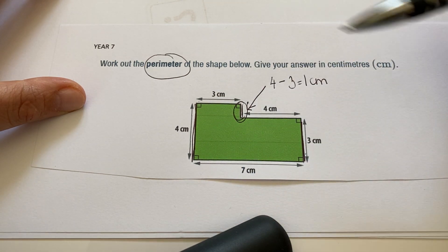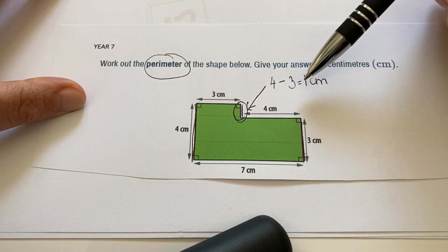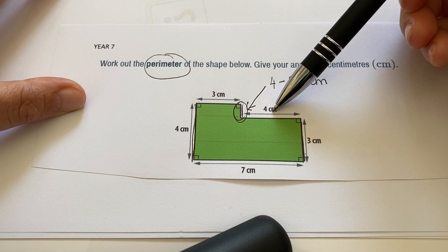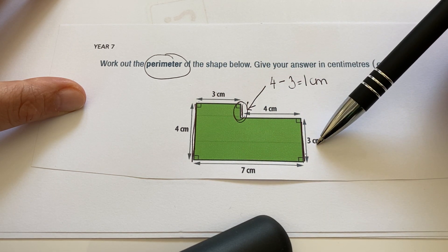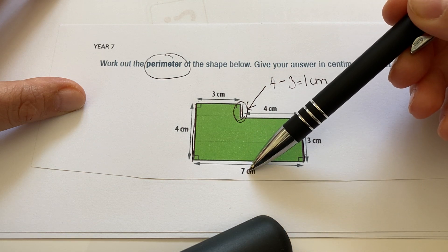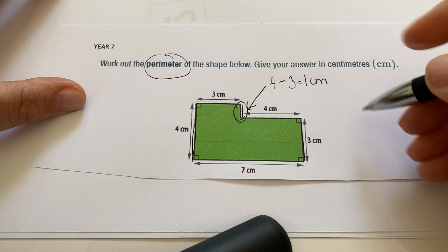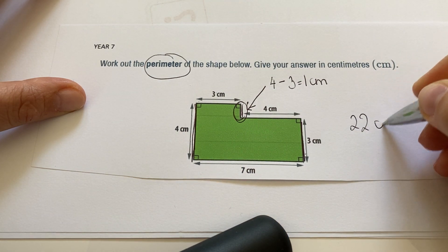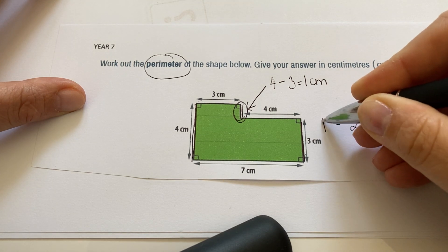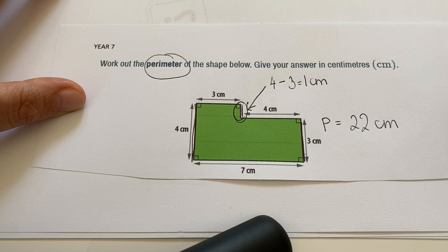Now you can add them up. 3 plus 1 is 4, plus 4 is 8, plus 3 is 11, plus 7 is 18, and plus 4 is 22 cm. So that is the perimeter of this compound shape.